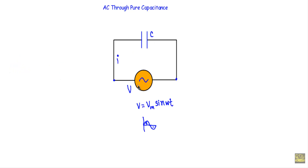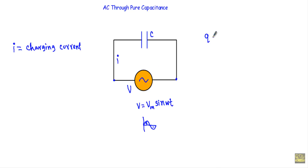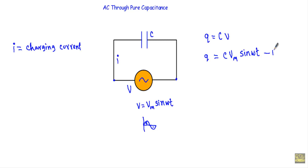I am applying an alternating voltage. As a result, I will get an alternating current I. In case of this capacitive circuit, the alternating current I will be known as charging current, because the charging current causes the capacitor plates to be charged in positive and negative charges. Therefore, I will get instantaneous charge Q in the circuit. We can calculate the instantaneous charge Q using the formula Q equal to capacitance C into instantaneous voltage V. Our instantaneous voltage V is given by Vm sin ωt. Therefore, Q equal to C·Vm·sin(ωt) will be our equation number one.